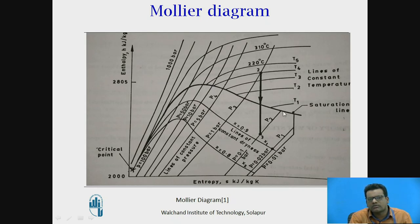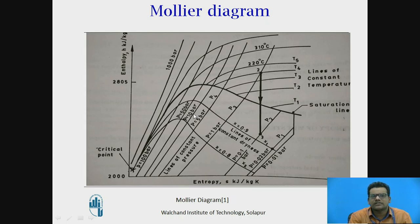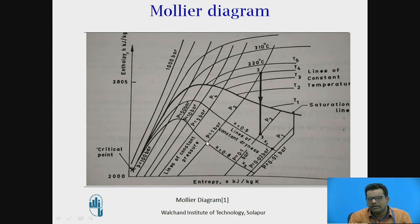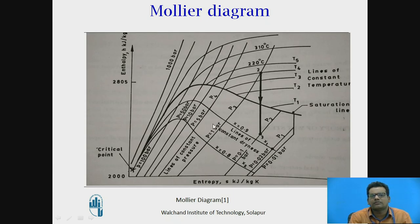If you draw parallel lines to the saturated liquid line, these represent constant dryness fraction lines — X = 1, X = 0.9, X = 0.8, and so on. These lines also represent constant temperature lines. The use of the Mollier Diagram is to find remaining conditions when two properties are known. For example, if pressure is given as 1 bar and temperature as 220°C, you locate the intersection point to find the remaining parameters such as enthalpy, entropy, or specific volume.